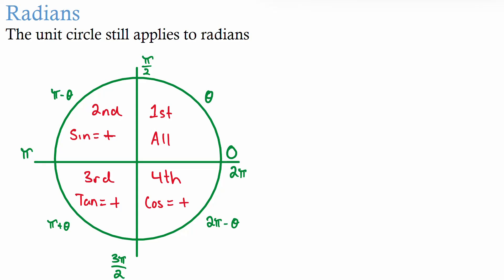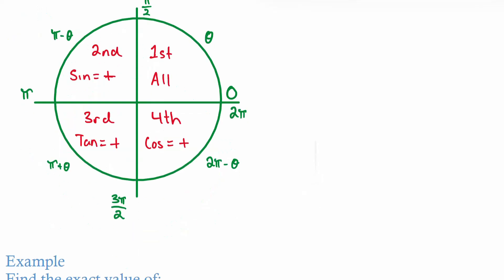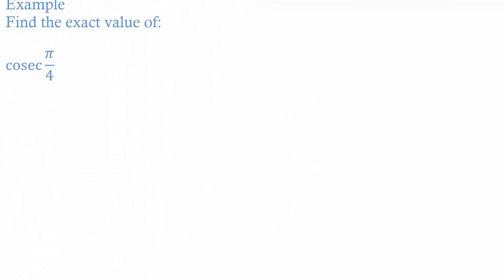Here's an example where we're going to find the exact value of cosec(π/4). The first thing I want to do is take note that cosec θ is the same as 1 over sin θ — just remember that.